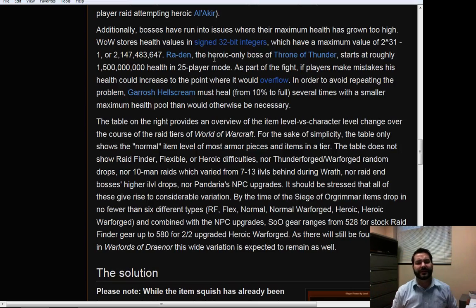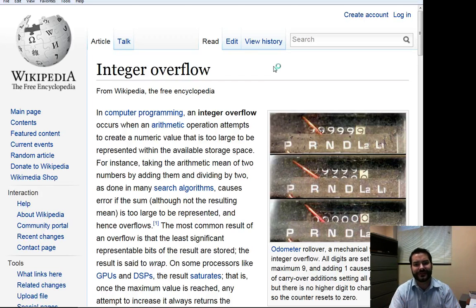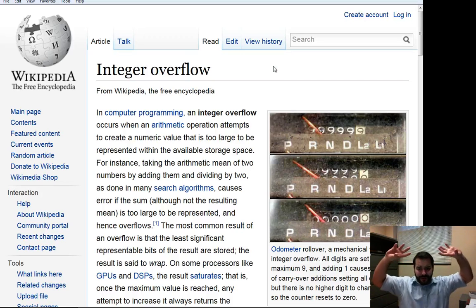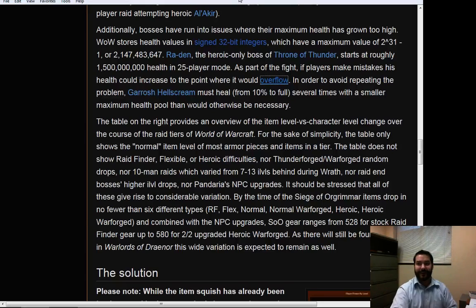Ra-den, the heroic-only boss of the Throne of Thunder, starts out at roughly 1.1 billion health. Throughout the fight, if the players screw up, they make mistakes, they're not where they need to be, they're not killing the adds, what can happen is it can overflow. What's an overflow? An overflow is like your old-timey odometers. When you got to the very top, the biggest number you could, you roll back to zero. If Ra-den, if you screw up, you're not doing your job as a healer or DPS, and you're not throwing the DoTs on there, suddenly Ra-den's going to go into an overflow, and suddenly he dies.